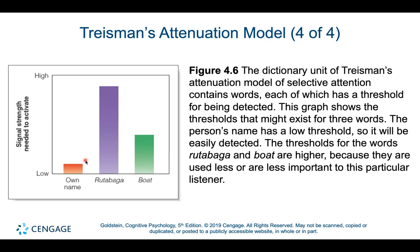Notice that thresholds for activation will be different from person to person. You don't have a low threshold for my name — I have a low threshold for my name; it's individual to me. For example, imagine you have a friend who is a rutabaga farmer. They might hear the word 'rutabaga' across the cocktail party because that word is important to them, while you never even process it. These differences in threshold change depending on each individual's experience.